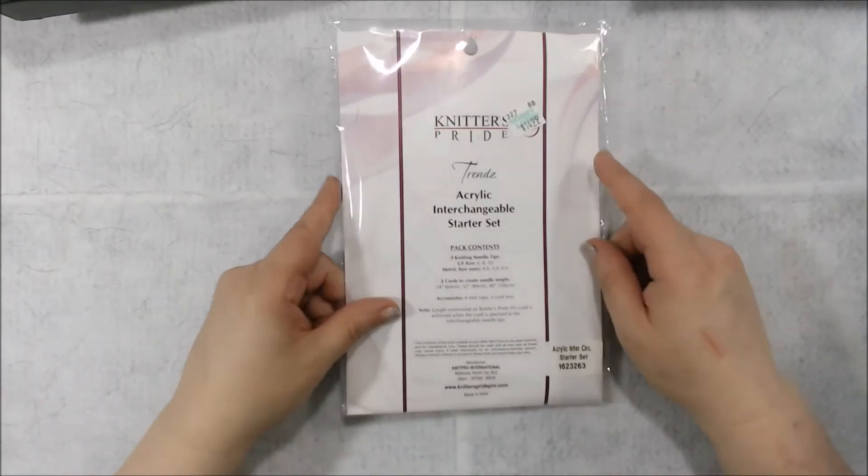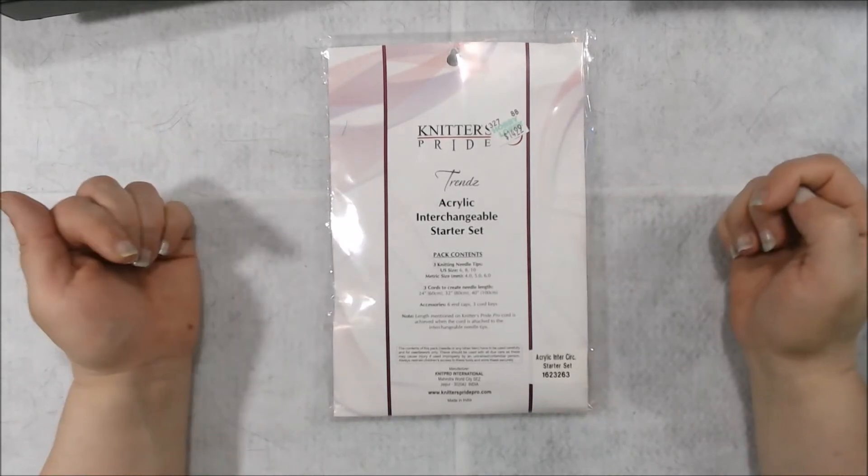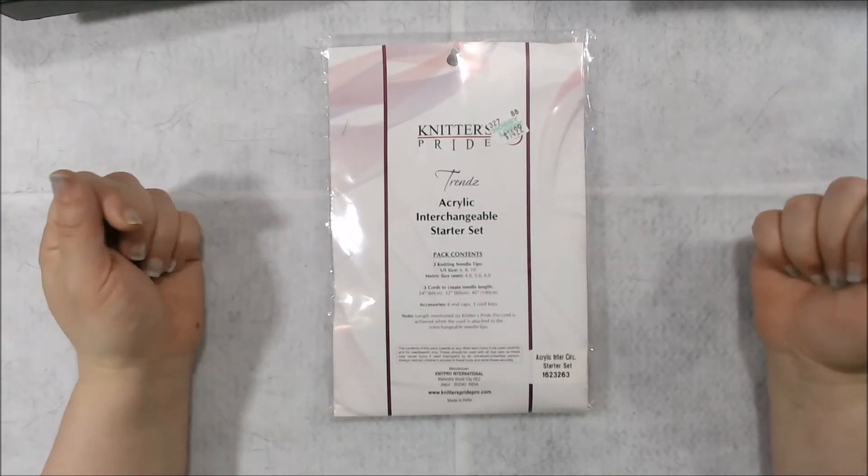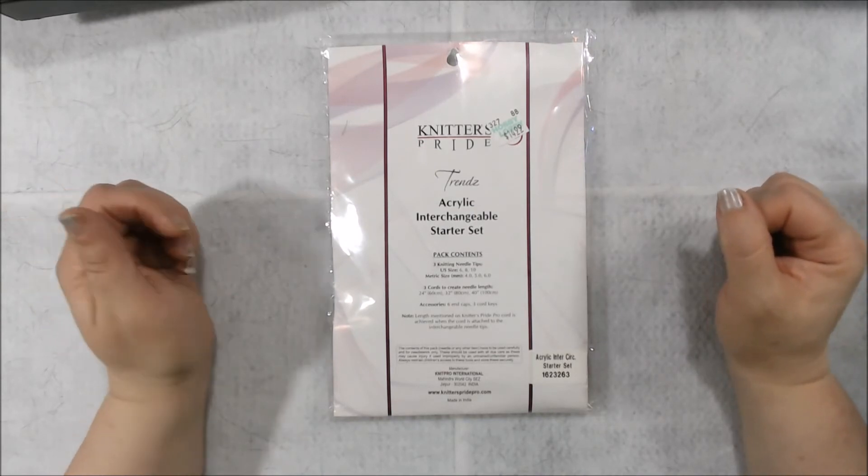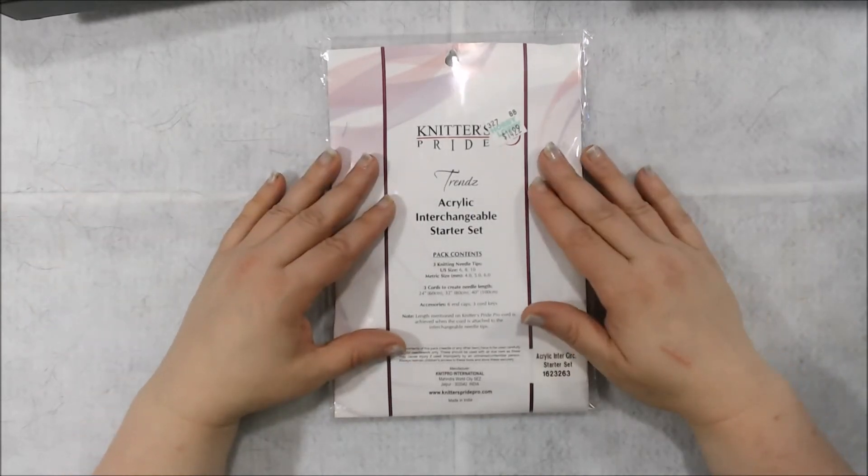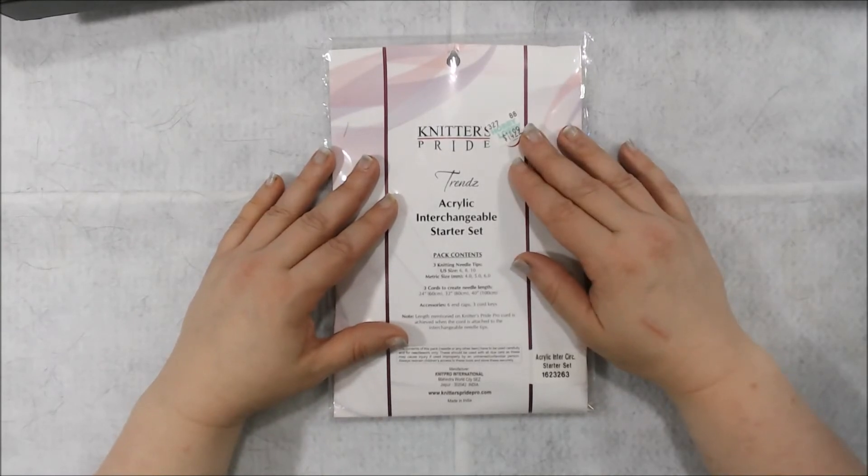And last but not least, this is what I use my coupon on. You get a 40% coupon every time at Hobby Lobby. And this one, I am a big thing for knitting. And this is an acrylic interchangeable starter set. It is normally $14.99. I used my coupon and I paid $8.99 for it.